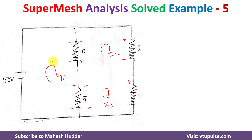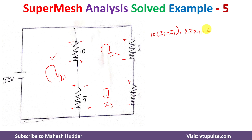We already found the equation for loop I1. Now we need to find the equation for the super mesh loop. This is: 10(I2 minus I1) plus 10(I2 minus I1) plus 2·I2 plus 1·I3 plus 5(I3 minus I1) equals zero. Now we need to simplify this equation.